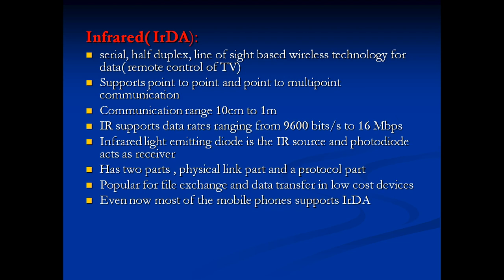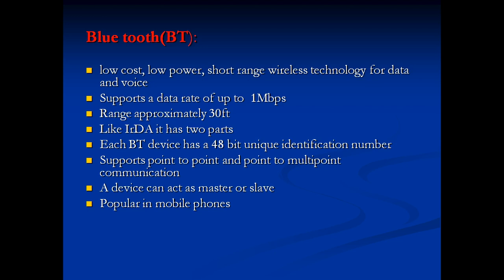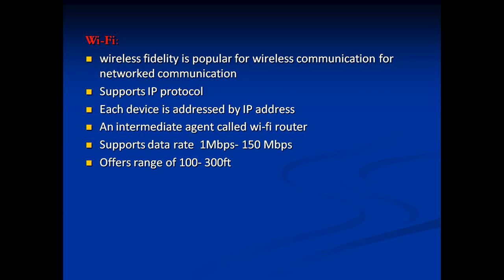IrDA uses an infrared LED as the IR source and a photodiode as the receiver. It has two parts: physical link part and protocol part. It is popular for file exchange and data transfer in low-cost devices; most mobile phones support IrDA. Bluetooth is a low-cost, low-power, short-range wireless technology for data and voice. It supports a data rate of 1 Mbps with a range of approximately 30 feet. Like IrDA, it has two parts. Each Bluetooth device has a 48-bit unique identification number.